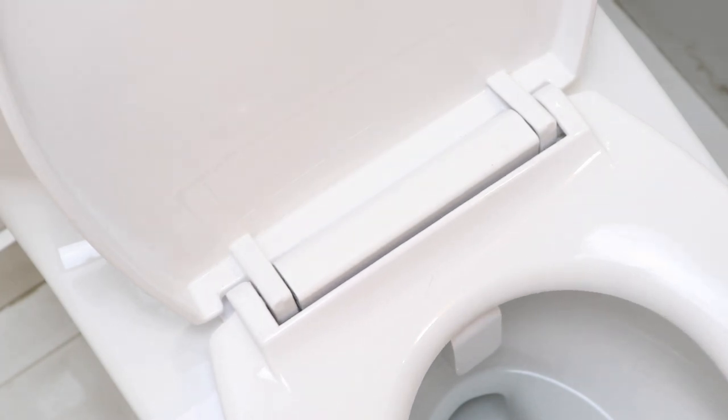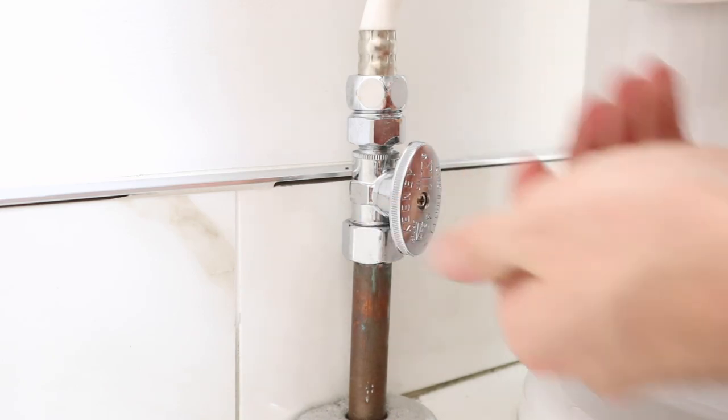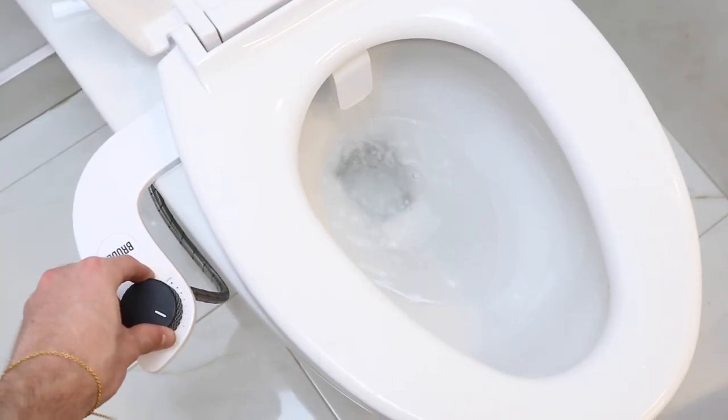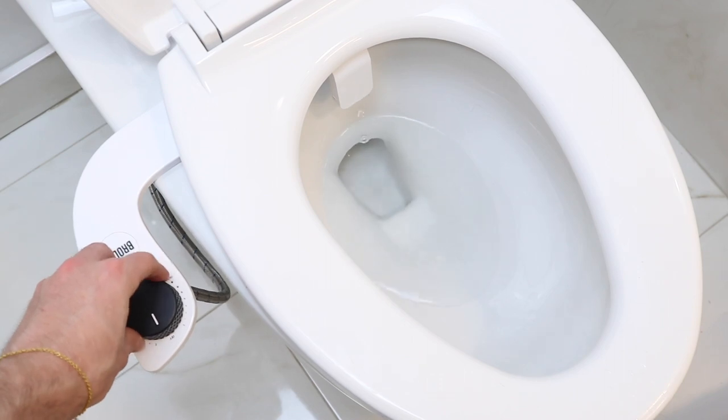Line up your toilet seat with your toilet and make sure the brode has enough space from the back of the toilet bowl. Retighten both screws and now turn your water supply back on. Congratulations, you've finally installed your brode and have upgraded the way you poop.